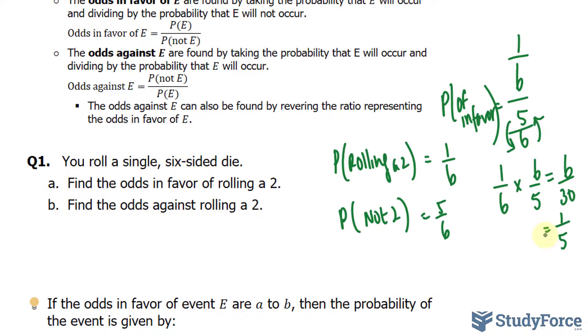In question B, find the odds against rolling a 2. So just like before, we'll just flip the fraction. Instead of having 1 over 6 at the top, we have it in the denominator, and 5 over 6 as the numerator. So 5 over 6 over 1 over 6.